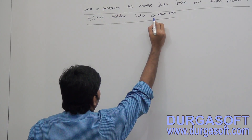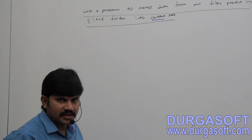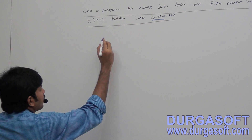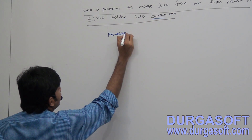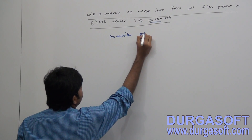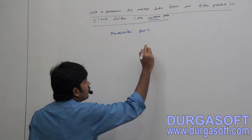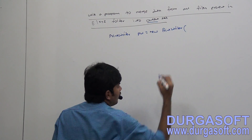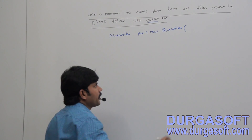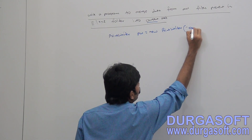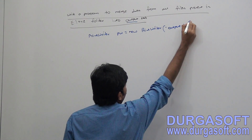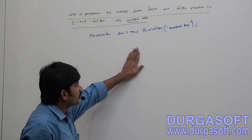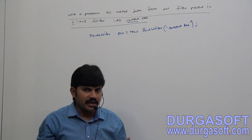To write to output.txt, the best writer is PrintWriter. PrintWriter pw = new PrintWriter("output.txt");